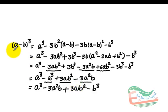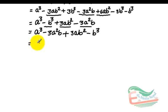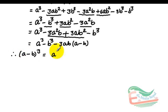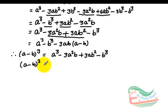Hence, we write: a minus b whole cube equals a cube minus 3a square b plus 3ab square minus b cube. So if we write a cube minus b cube together and take common from the middle two terms, there would be minus 3ab common. So after taking minus 3ab common, a minus b whole cube can also be written as a cube minus b cube minus 3ab times a minus b.